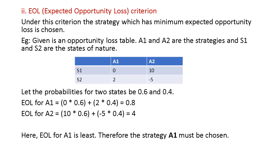Next is EOL — Expected Opportunity Loss criteria. Here the loss table is considered. Given an opportunity loss table: A1 and A2 are the strategies, S1 and S2 are the states of nature, with values 0, 10, 2, and -5. Probabilities are 0.6 and 0.4 for S1 and S2 respectively.